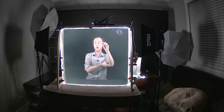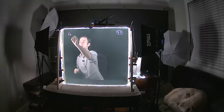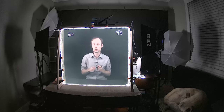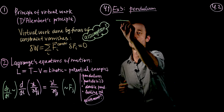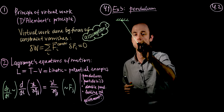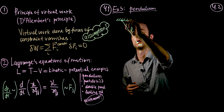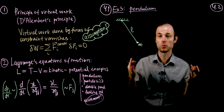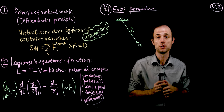We're going to start with Example 3, because two examples — particle on a spring and freefall — we already covered in the previous lecture. Now we're going to go on to Example 3, which will be a pendulum.